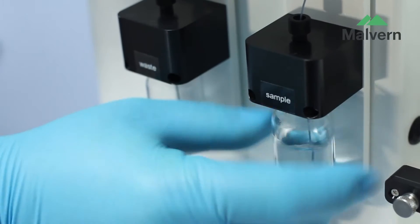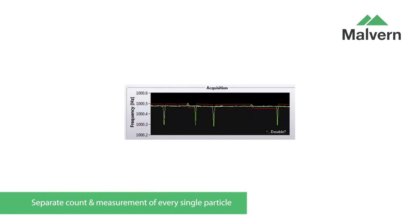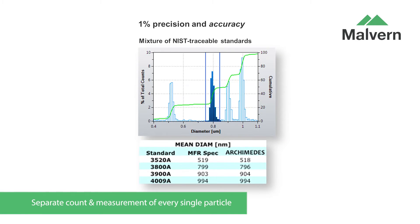Polydispersed systems are no problem at all for Archimedes as the instrument measures every particle entirely independently, building up the big picture of what's contained within your sample.